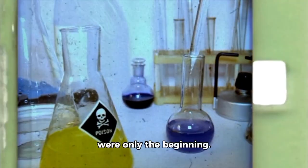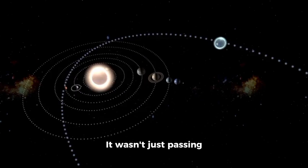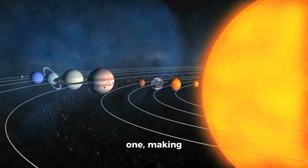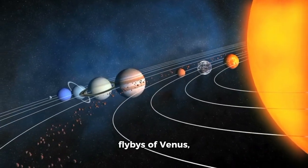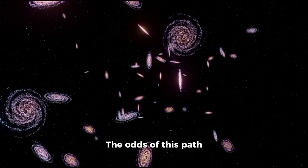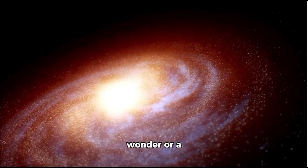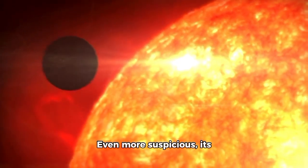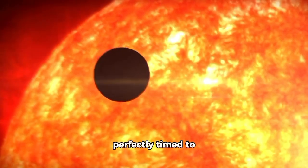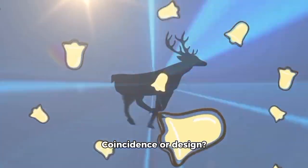But chemical anomalies were only the beginning. As astronomers tracked 3i Atlas's trajectory, the unease deepened. It wasn't just passing through the solar system randomly. It was navigating it, one by one, making astonishingly precise flybys of Venus, Jupiter, and Mars—a statistical impossibility for any natural object. The odds of this path occurring by chance, 0.005%, a cosmic wonder or a manufactured route. Even more suspicious, its closest approach to the sun, its perihelion, happened behind the sun, perfectly timed to obscure it from Earth's instruments when it was at its most active. Coincidence or design?